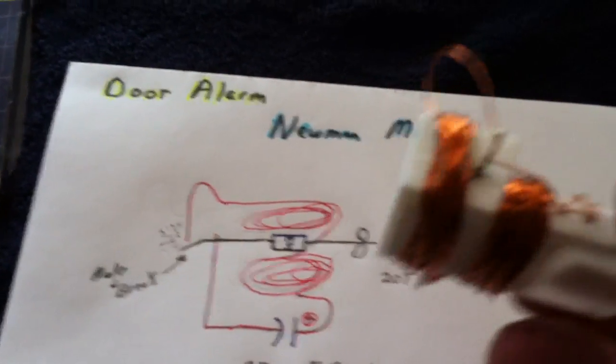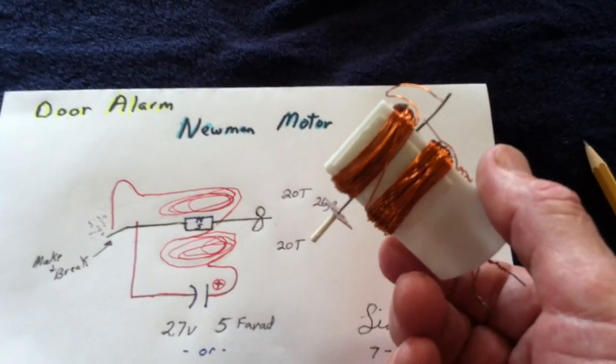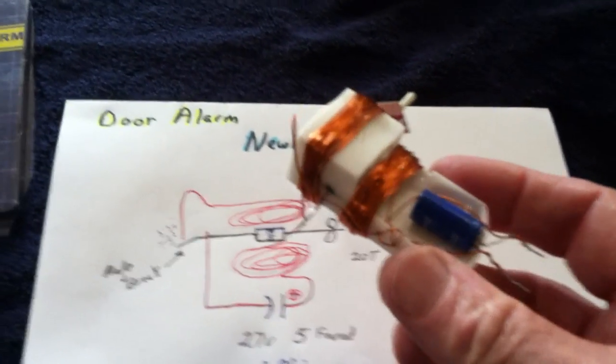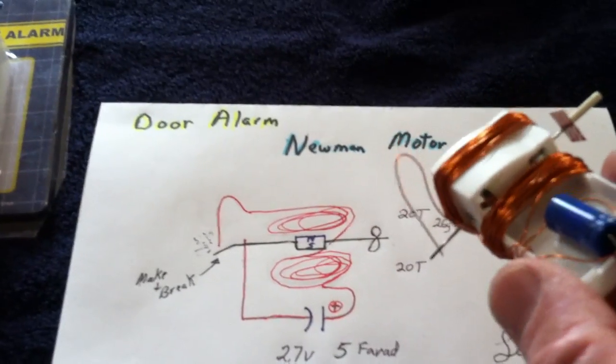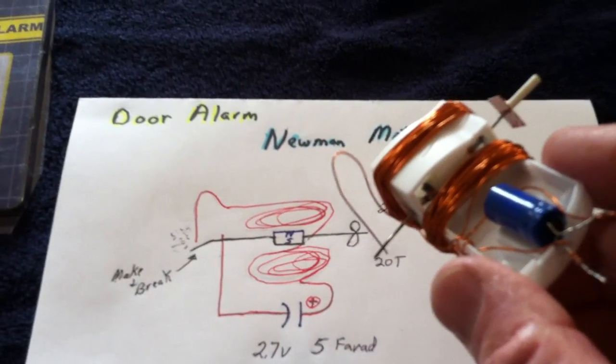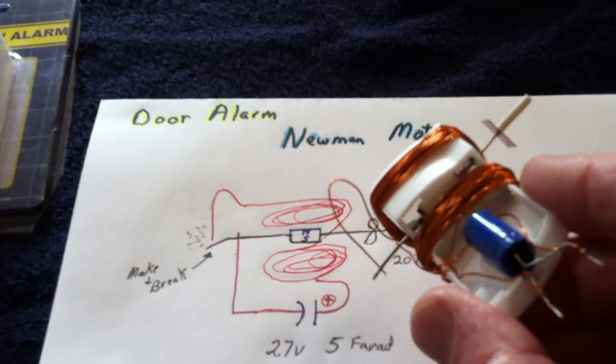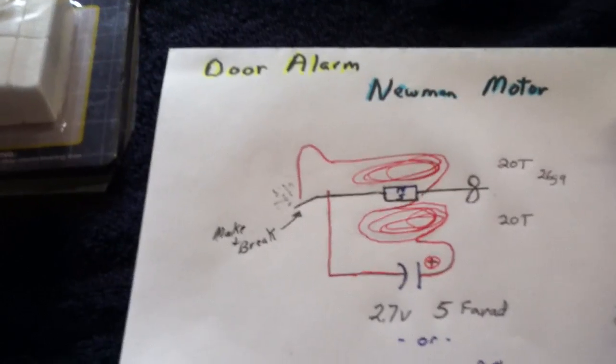And then the wire is just wrapped around that in the same direction, about 20 turns on each part there. And you just go around and around. And one part of the wire is of course stripped down, take the varnish off of it and lays on the make and break. And then the other part of the circuit lays on the shaft. And that's all there is to that motor.